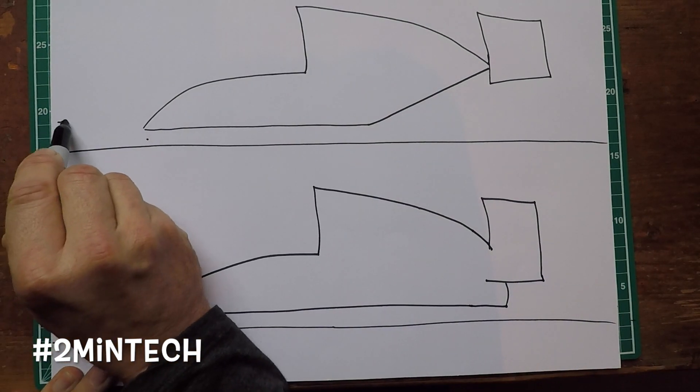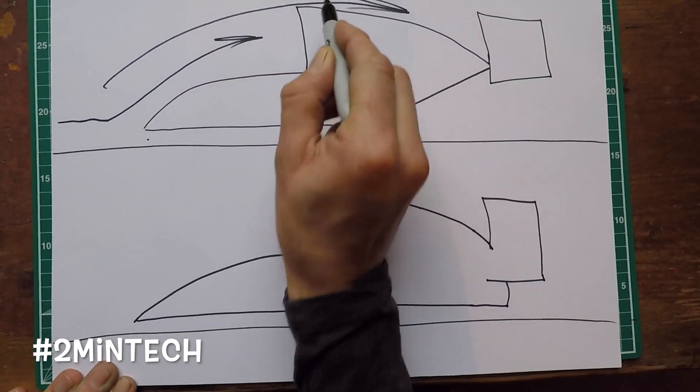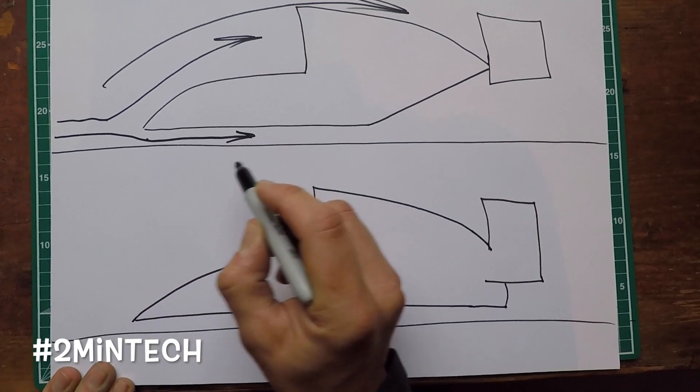Airflow hitting the fast moving car separates of course. Some passes over the top of the car, some passes underneath this narrow channel underneath the car.